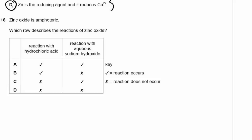Question 18. Zinc oxide is amphoteric — it can act as both an acid and an alkali. Does it react with hydrochloric acid? Yes, it acts as a base: acid + alkali → salt + water. Does it react with aqueous sodium hydroxide? Yes, it acts as an acid: acid + alkali → salt + water. So the answer is A — zinc oxide reacts with both hydrochloric acid and sodium hydroxide.